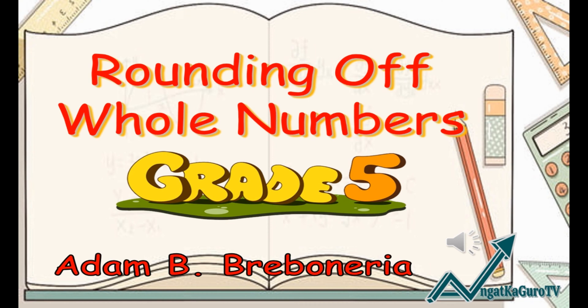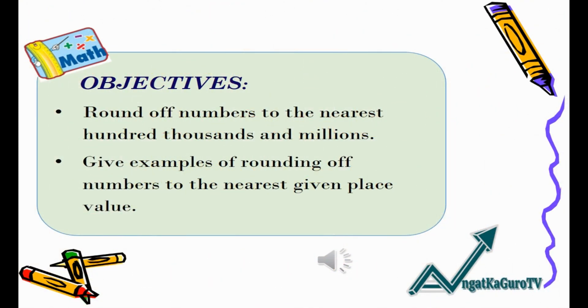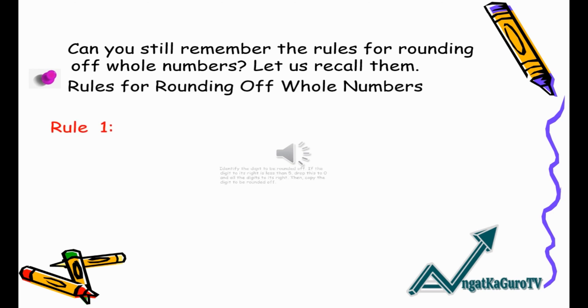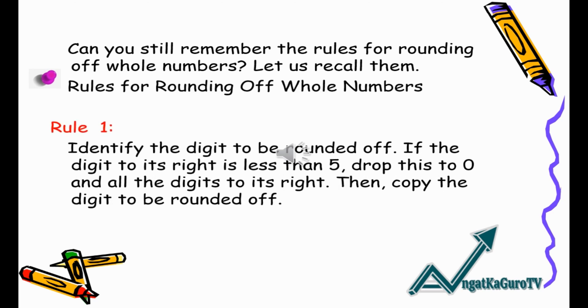Good morning Grade 5. Our lesson today is about rounding off whole numbers. The objectives of our lesson are to be able to round off numbers to the nearest hundred thousands and millions, and give examples of rounding off numbers to the nearest given place.